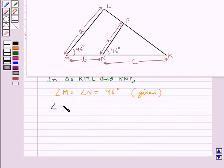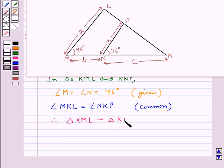Then, angle MKL is equal to angle NKP. Since this is the common angle to both the triangles. So, therefore, we say that triangle KML is similar to the triangle KNP.